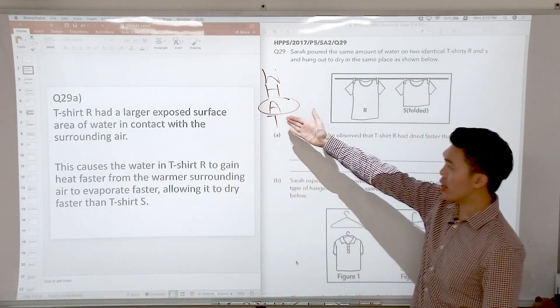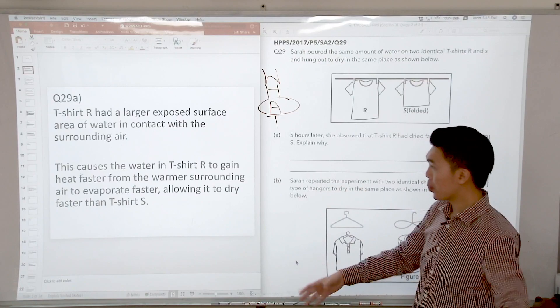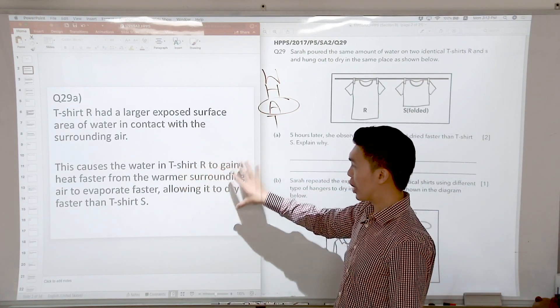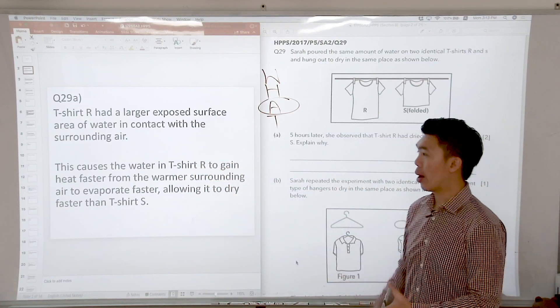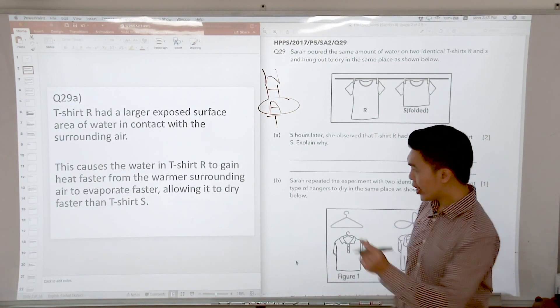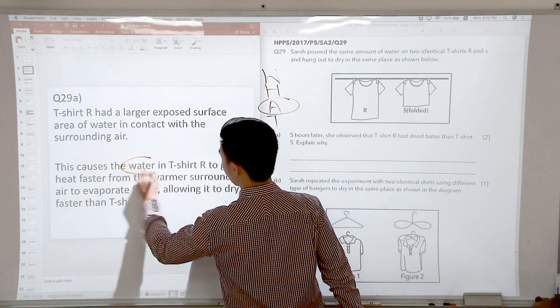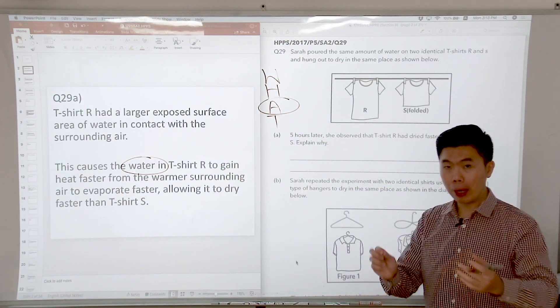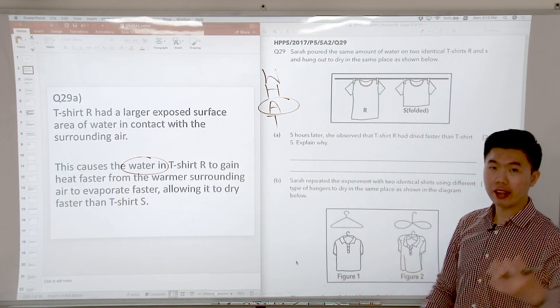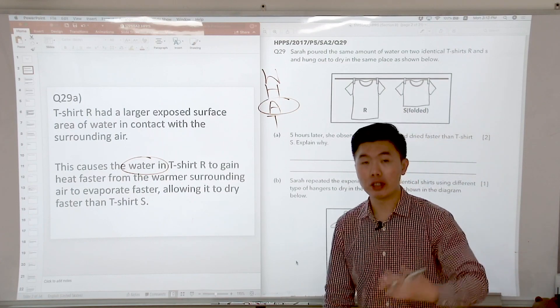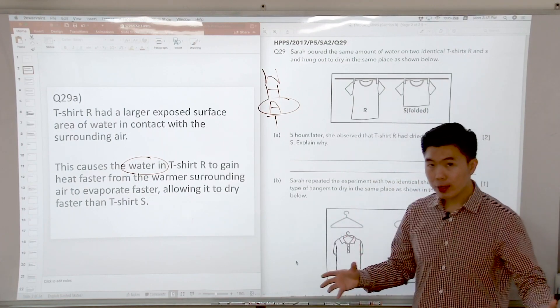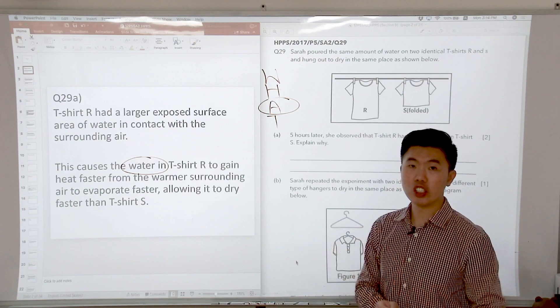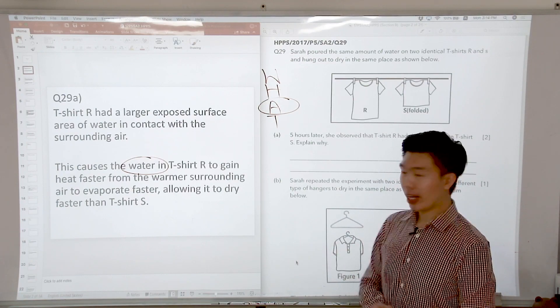Larger surface area in contact with the surrounding air causes water in the T-shirt to gain heat faster from the warmer surrounding air to evaporate faster. One key thing I want you to take note from the answers is the water in the T-shirt, because some teachers are particular about the phrasing. If you just say that the T-shirt evaporates, they will not give you the full marks because it is the water in the T-shirt that evaporates.